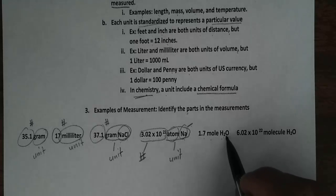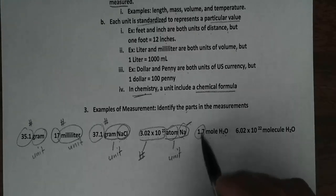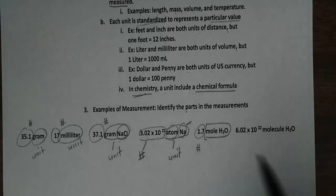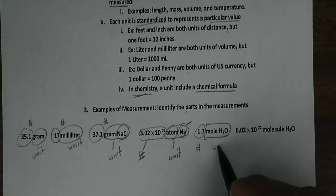Then we have 1.7 mol of H2O, dihydrogen monoxide. 1.7, that would be your number. And this mol of H2O, that would be your unit. And the chemical formula is dihydrogen monoxide.